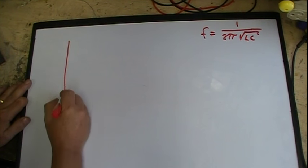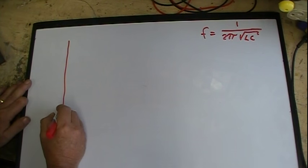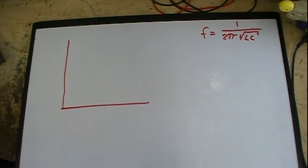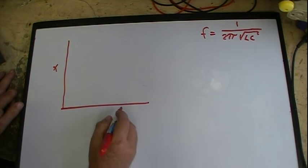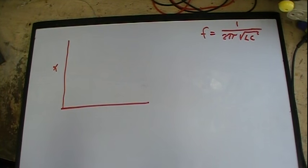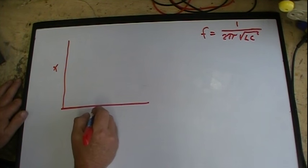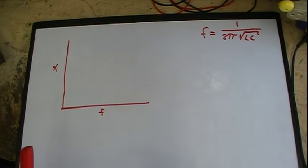I want to do an exercise to help you understand where this came from. We're going to draw a little graph here. Over here is X for reactance, like inductive and capacitive reactance. And down here is frequency.